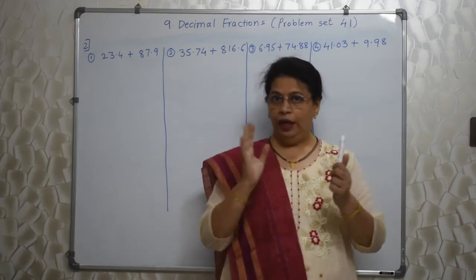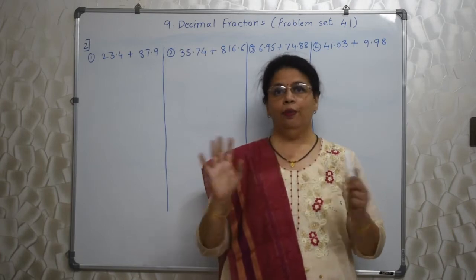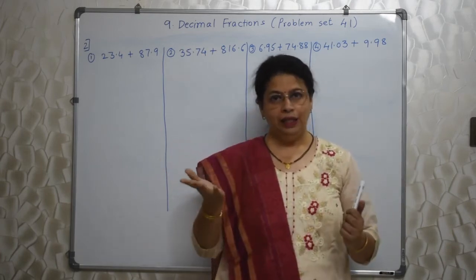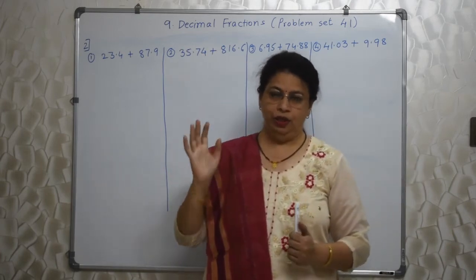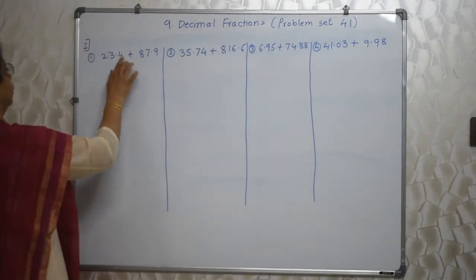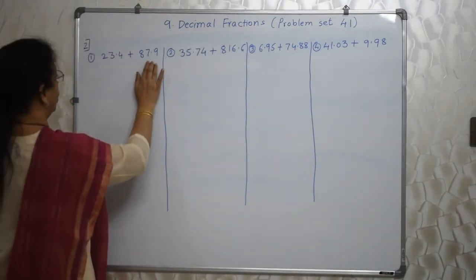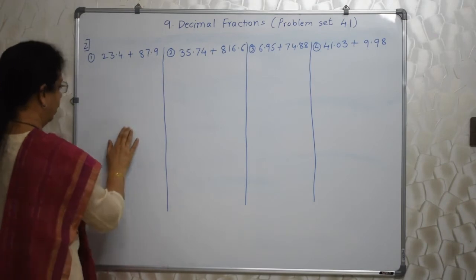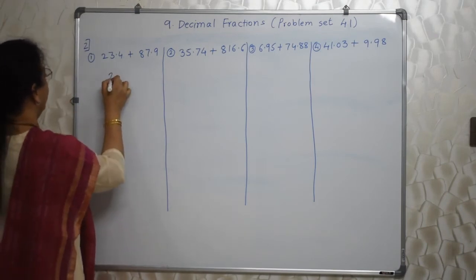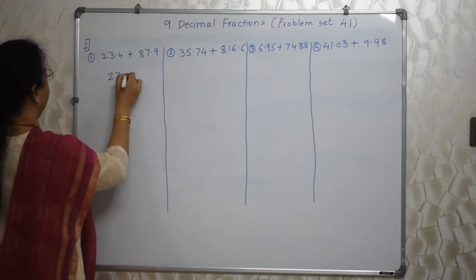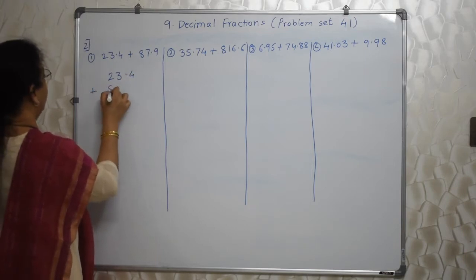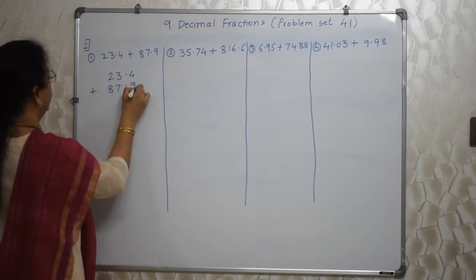Agar woh idar udar hil gaya, toh aapka answer wrong aane waala hai. So only one thing — very easy: decimal ke niche decimal. Jho unho re horizontal form mein diya hai, woh hum vertically likh lethi hai. 23.4 plus 87.9.